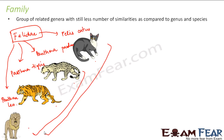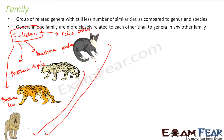So the similarities between two lions are greatest because they belong to the same species. The similarity between a lion and a tiger is lesser. The similarity between a lion and a cat is still lesser. As we go up the taxonomic hierarchy, similarities keep decreasing. Genera in one family are more closely related to each other than to genera in any other family. So a cat shares more similarities with a tiger and a leopard than with an elephant or a human being, because the elephant and human belong to different families.